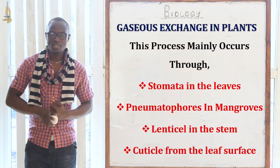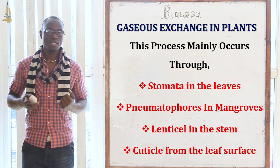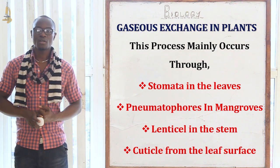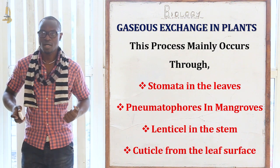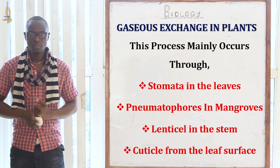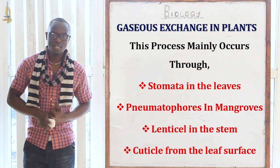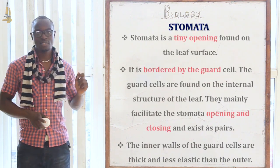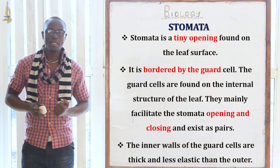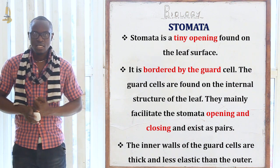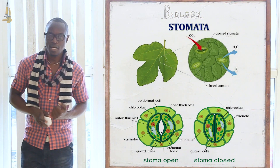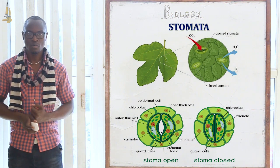Gaseous exchange in plants mainly takes place through the stomata, the pneumatophores found in mangroves, the lenticels, and through the cuticle. Gaseous exchange through the stomata: a stomata is a very tiny opening on the leaf surface, bordered by guard cells whose function is to open and close the stomata.